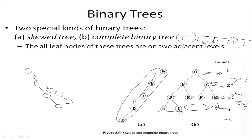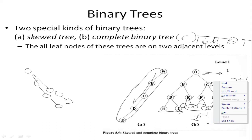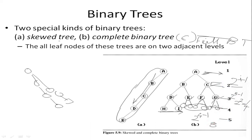For a full binary tree, nodes at each level are complete, including the last level. For example, if the tree has depth 4, the last level must also be full. At the fourth level, the maximum nodes are 2^(4-1) = 2^3 = 8. So at the last level there should be eight nodes: one through eight. That is a full binary tree.